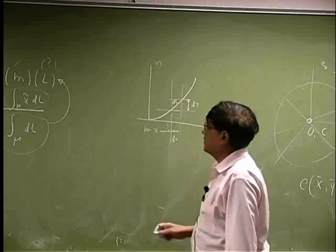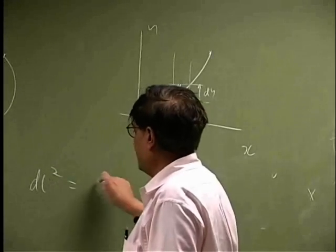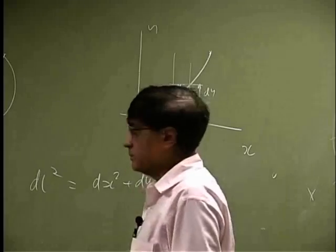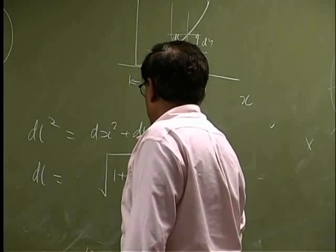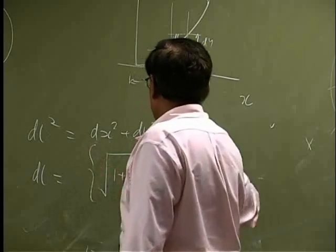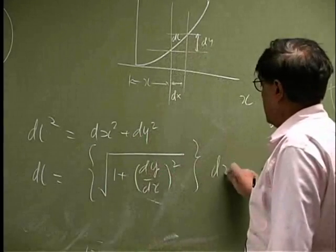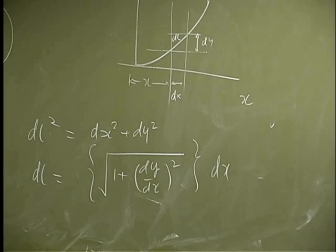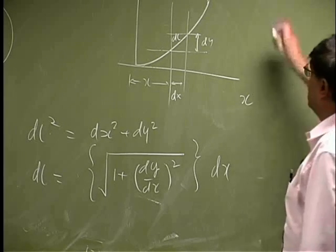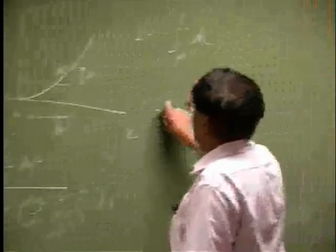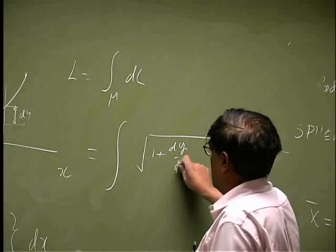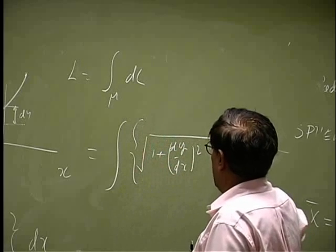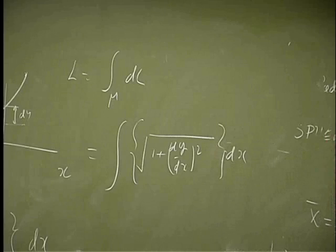Then the length DL squared is going to be dx squared plus dy squared. Or, DL will be square root of 1 plus dy over dx squared times dx. So your length L is an integration over DL. That is an integration over square root of 1 plus dy over dx squared dx. And I am sure you have seen this equation before in calculus to find lengths of the given curves.